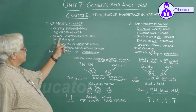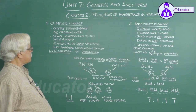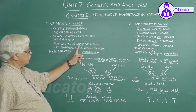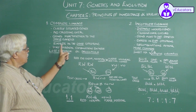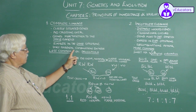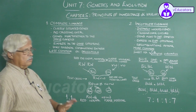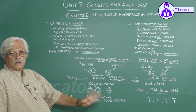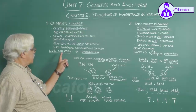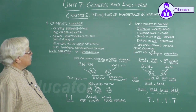Genes are very closely located and located in the same place. In this case, there is a complete linkage between parental combinations and recombination. In this case, we are not going to have crossing over, maintaining a complete link.